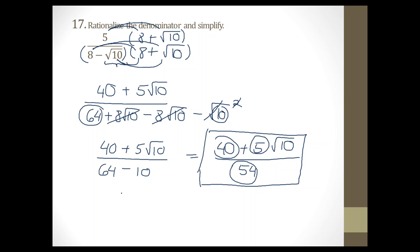On your review and test, this problem will be written in the form A plus √B over C, where you type in the values of A, B, and C. In our case, A equals 40.